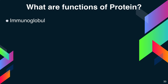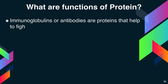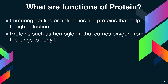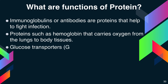Immunoglobulins or antibodies are proteins that help in fighting infection. Proteins such as hemoglobin carry oxygen from the lungs to the body tissues. Glucose transporters transport glucose to your cells, while liver proteins transport cholesterol and other fats to your blood.